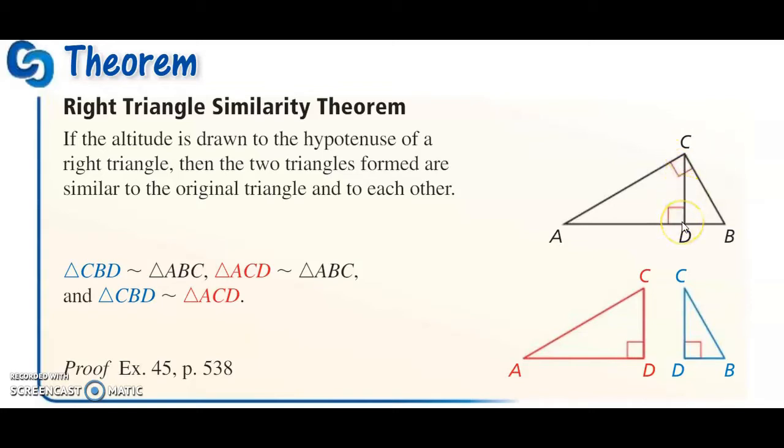The altitude is also known as the height. It goes from the bottom straight up, making a 90-degree angle. When you draw in the altitude, you actually create three triangles—the two inner ones and the big outer one—and it turns out they're all similar.